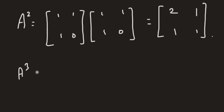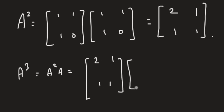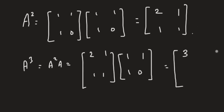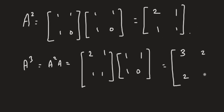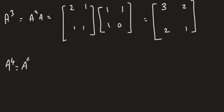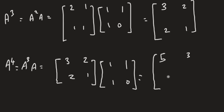Then A cubed: take A squared times A — A squared is [2, 1; 1, 1] multiplied by A — giving [3, 2; 2, 1]. Then A^4 is A cubed times A: [3, 2; 2, 1] gives [5, 3; 3, 2].